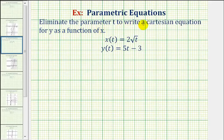We want to eliminate the parameter t to write a Cartesian equation for y as a function of x. Before we do this, notice we have x of t equals two times the square root of t. Since this t is underneath the square root, notice that t has to be greater than or equal to zero. This will affect the domain of our Cartesian equation.